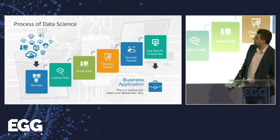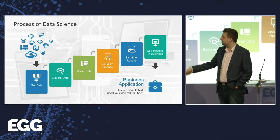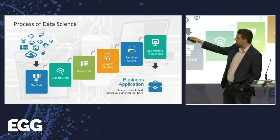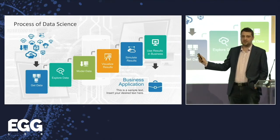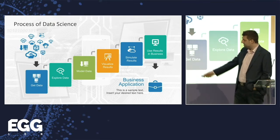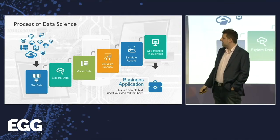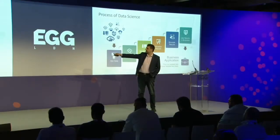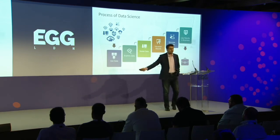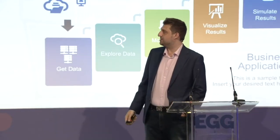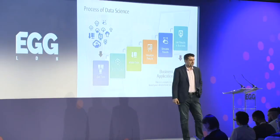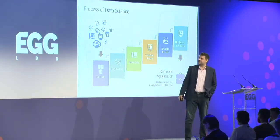This one looks about the same — get data, explore, model, visualize, simulate — but the new addition is 'use results in business.' It's the first data science process slide that makes the case that all this work actually has to be used in a business environment. The structure is pretty agnostic; it doesn't matter what the business application is — this data science process works for everything. So we've reached a data science process that includes the business and can start with asking a question.